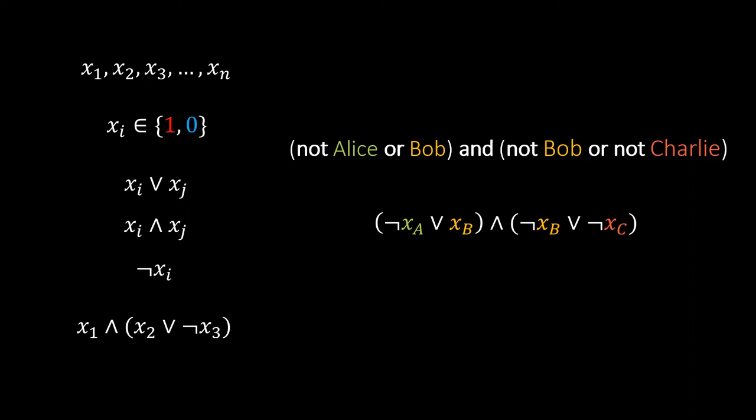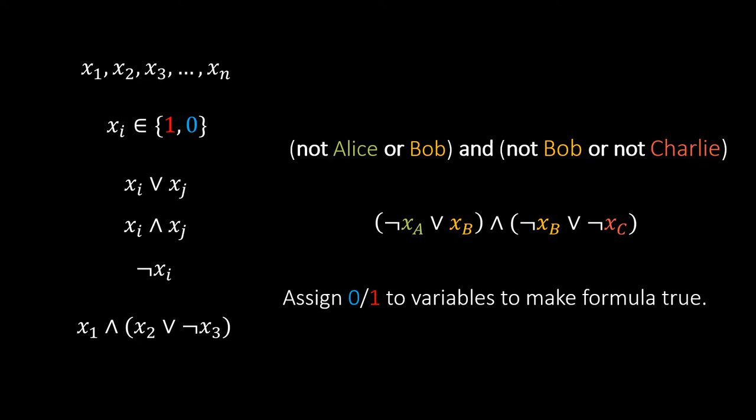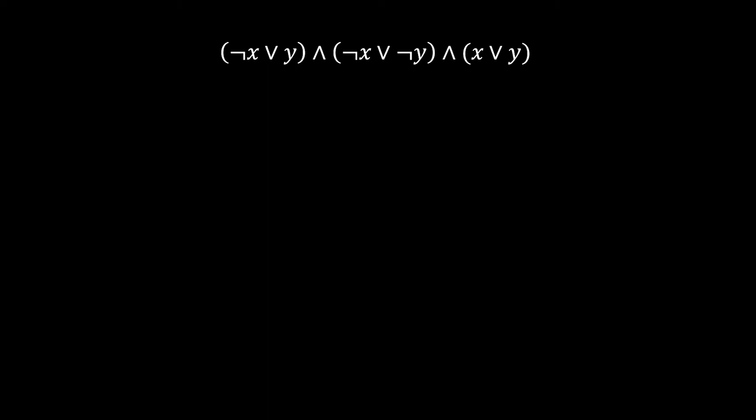Armed with this knowledge, the satisfiability problem can now be stated simply. Given a Boolean formula, assign values to its variables to make it evaluate to true. But now you might be wondering, how hard is it to solve it? To get an intuition, pause the video now to see if you can find a satisfying assignment for this formula.